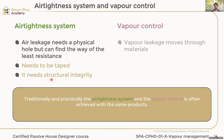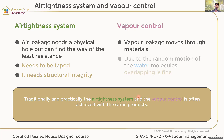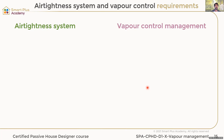Vapor control is different — vapor leaks movement through materials. Due to the random motion of water molecules, overlapping is fine for vapor control. But overlapping is not okay for the air tightness part.